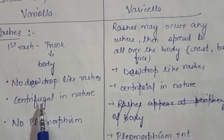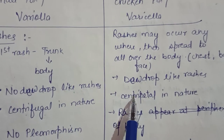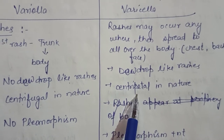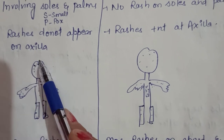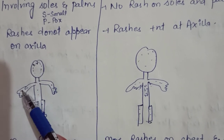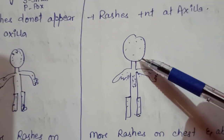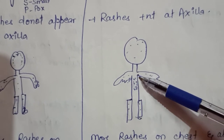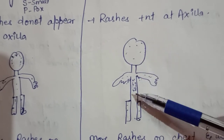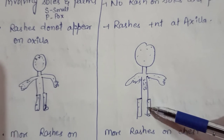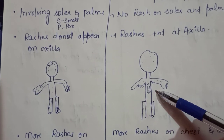In smallpox the rashes are centrifugal in nature — meaning fewer rashes in the central area and more on the periphery. As you can see in the diagram, in smallpox the rashes are more over the head, arms, and legs compared to the abdomen. In chickenpox the rashes are more on the trunk and abdomen, also present in the axilla, with fewer rashes on the face and peripheral areas — this is centripetal in nature.